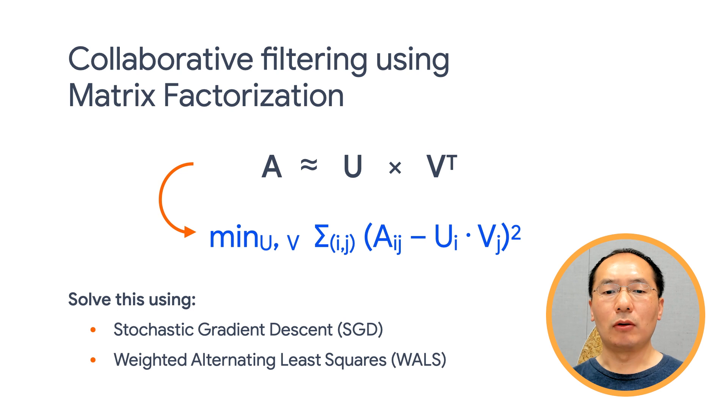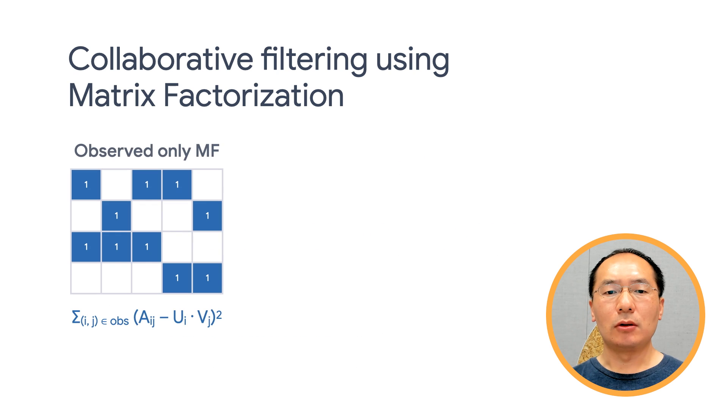But so far, we only cared about observed items. What about the unobserved ones? So observed-only matrix factorization is not good, because if you set the embeddings to all ones, you have minimized the objective function, which is clearly not what we want. So we need to take into account the unobserved entries.